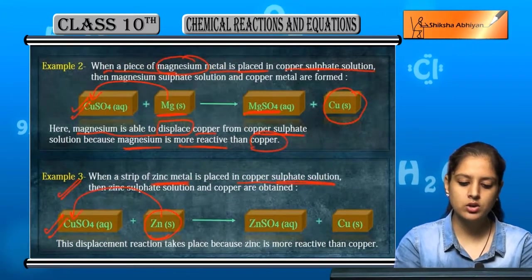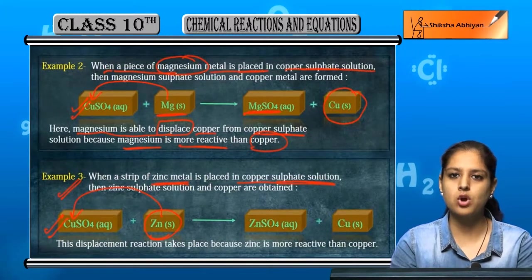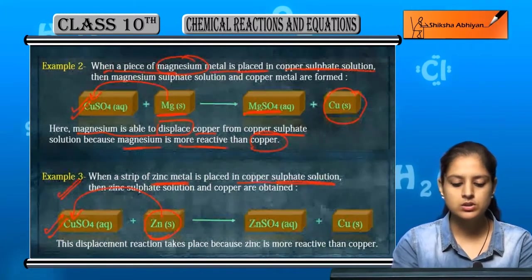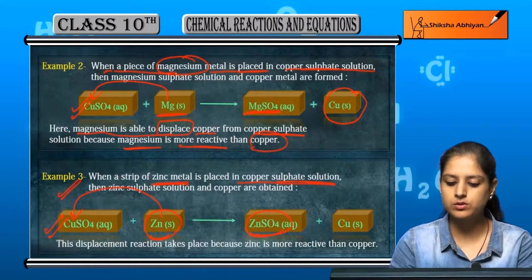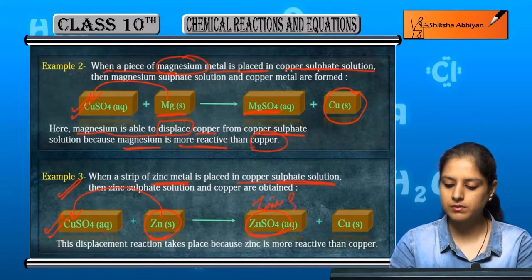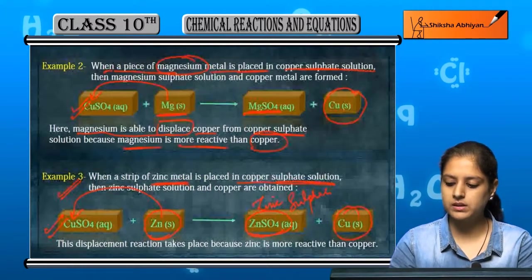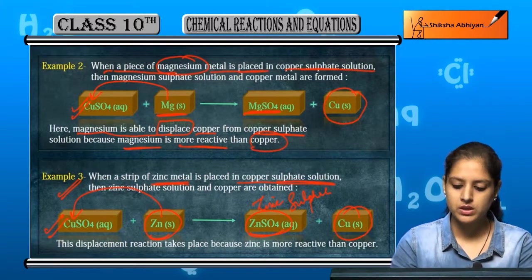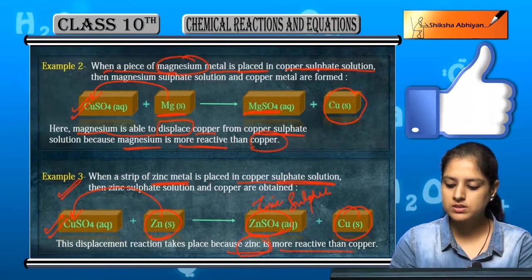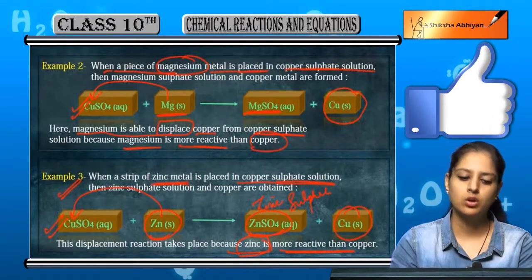Zinc displaces copper from copper sulphate. CuSO4 becomes ZnSO4, which is zinc sulphate, and copper metal is also formed because zinc is more reactive than copper.